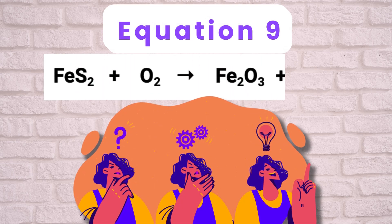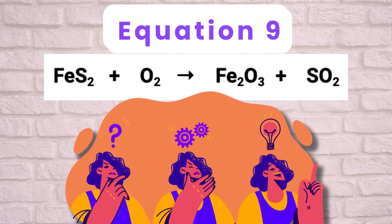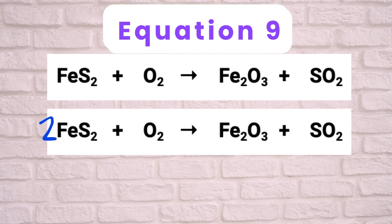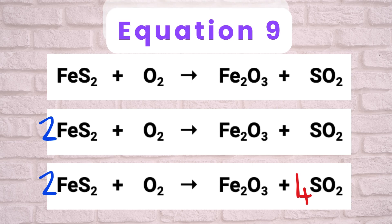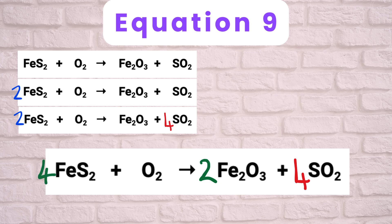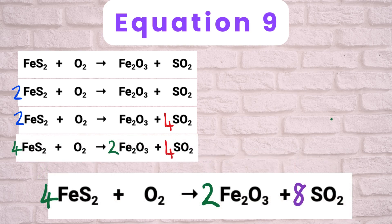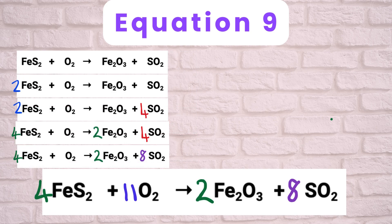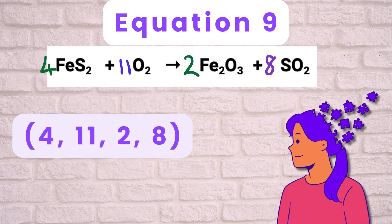Equation 9: FeS2 plus O2 gives Fe2O3 plus SO2. Balance iron by putting a coefficient of 2 in front of FeS2, so iron is 2 on both sides. Sulfur is now 4 on the left, so put a coefficient of 4 in front of SO2. Oxygen on the right is 3 plus 8 equals 11 — an odd number, so put a coefficient of 2 in front of Fe2O3, making iron 4 on the right. Change FeS2 coefficient to 4, making sulfur 8 on the left, and change SO2 to 8. Oxygen on the right is now 2 times 3 equals 6 plus 8 times 2 equals 16, which is 22, so the O2 coefficient is 11. Coefficients are 4, 11, 2, 8.